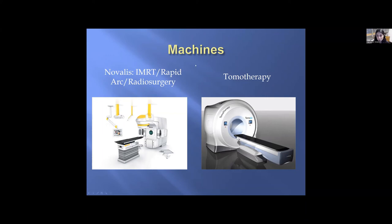Different machines you might read about include the Novalis, which we have here at UCLA — it delivers IMRT, rapid arc, and radiosurgery — and tomotherapy, which delivers 360-degree circular radiation. The most important thing is not just the machine but the experience of the physician and physicist using it.